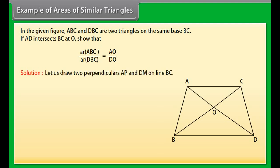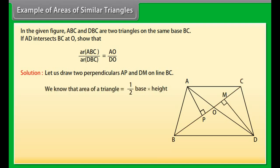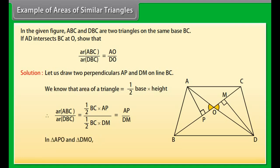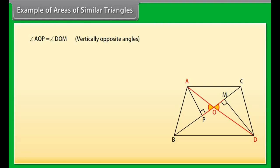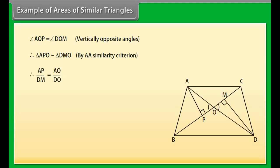Solution: Draw two perpendiculars AP and DM on line BC. Area of triangle ABC upon area of triangle DBC equals AP upon DM. In triangles APO and DMO: angle APO equals angle DMO (each 90°), angle AOP equals angle DOM (vertically opposite). Therefore triangle APO is similar to triangle DMO by AA similarity criterion. Thus AP upon DM equals AO upon DO, which implies area of triangle ABC upon area of triangle DBC equals AO upon DO.